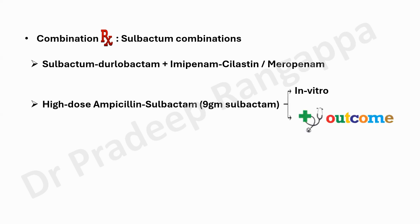Since sulbactam-durlobactam is unavailable in India, we have to look at other options. One has to consider high-dose ampicillin-sulbactam. The recommendation is that any sulbactam used should be more than six grams. Studies have shown it is effective in vitro and has better clinical outcomes when sulbactam is added. In India, ampicillin-sulbactam is available in a 2:1 ratio, and sulbactam is also available as an isolated molecule.